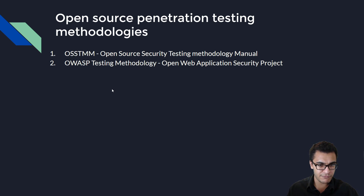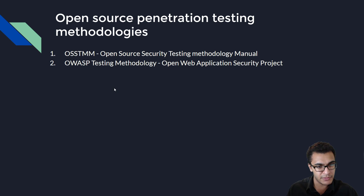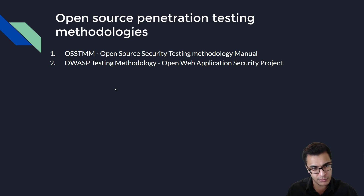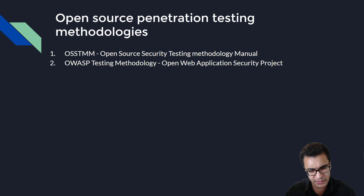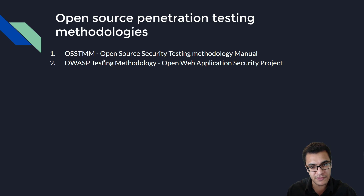For beginners, let's focus on the open source pen testing methodologies. We have the OSSTMM — the Open Source Security Testing Methodology Manual — and then you have your OWASP testing methodology, created by the Open Web Application Security Project. OSSTMM is specifically targeted at testing various aspects of the security posture of a company, such as physical security and wireless security. OWASP is used to test web applications by defining the top vulnerabilities that affect web applications in a particular year.